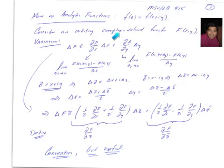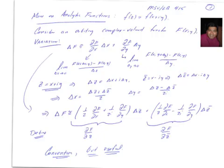Suppose we have an arbitrary complex-valued function capital F, which depends on the two real parameters x and y. We can compute the variation of F — that is, how much F changes when we change x and y — in terms of the partial derivatives dF/dx and dF/dy. For small δx and δy, the change in F is just dF/dx times δx plus dF/dy times δy, where dF/dx is the change in F while we vary x holding y fixed, and dF/dy is the change in F as we vary y holding x fixed.